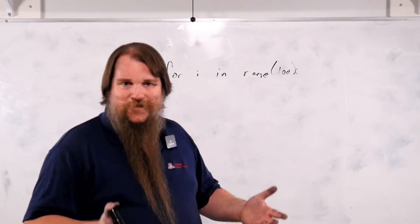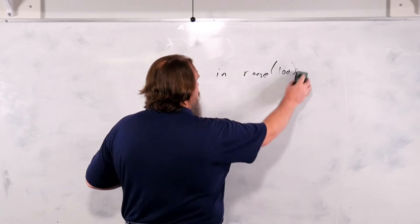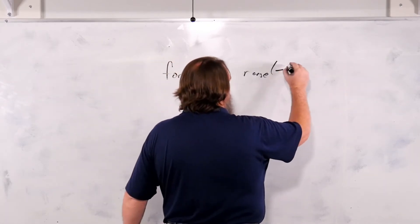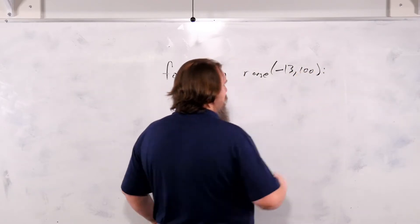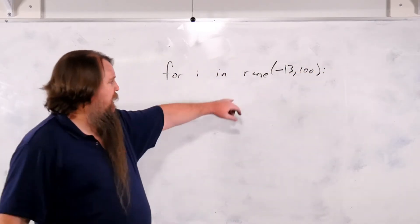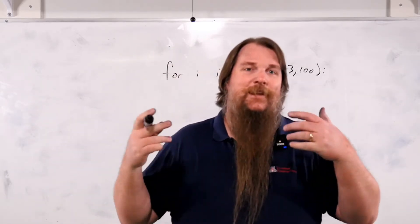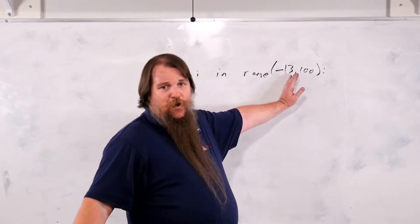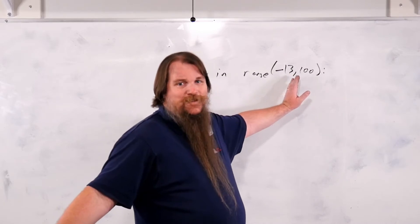Now sometimes you don't want to start at 0. So it is permissible to start at some other value, negative 13 comma 100. What will that do? Well, it will first have negative 13, then negative 12, then negative 11, all the way up to 0. And then we'll count up 0, 1, 2, 3, all the way up to 99.